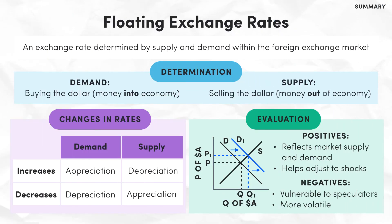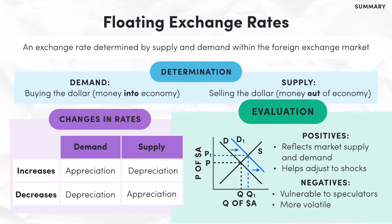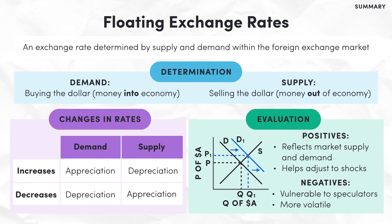We covered a lot of content, so let's summarise. We defined a floating exchange rate as one determined by the market forces of supply and demand within the foreign exchange market. Demand refers to those buying the dollar, or money coming into the economy; supply refers to those selling the dollar, or money leaving the economy. The Australian dollar will appreciate when demand increases or supply falls, and depreciate when demand falls or supply increases. Whenever you're asked to evaluate the effect of a shift in demand or supply on the value of the exchange rate, make sure to sketch out the supply and demand graph — it'll be a huge help.